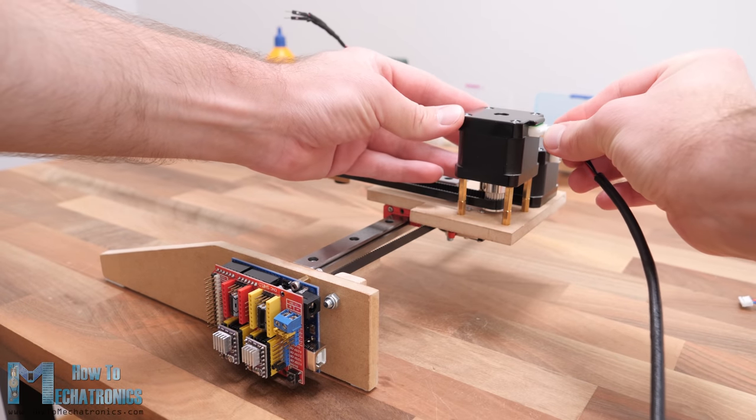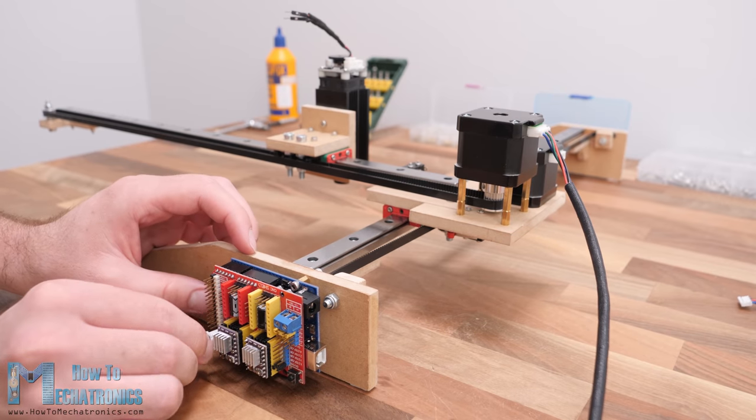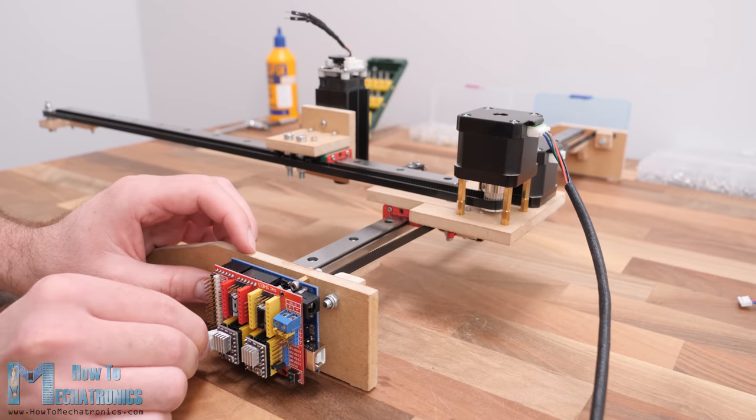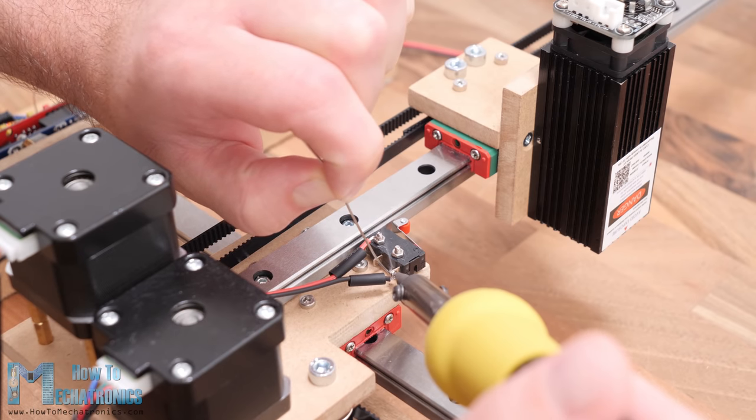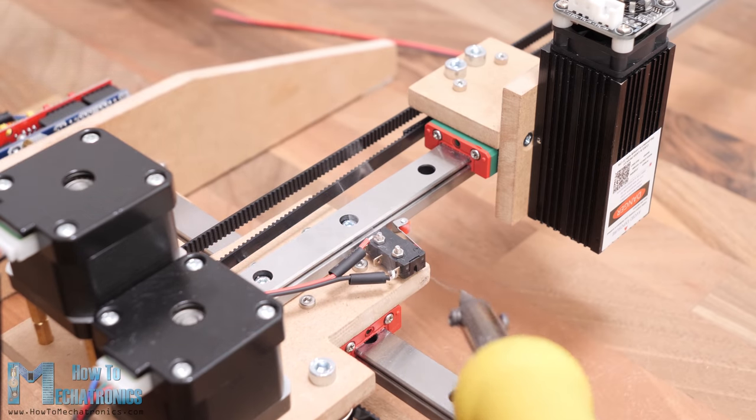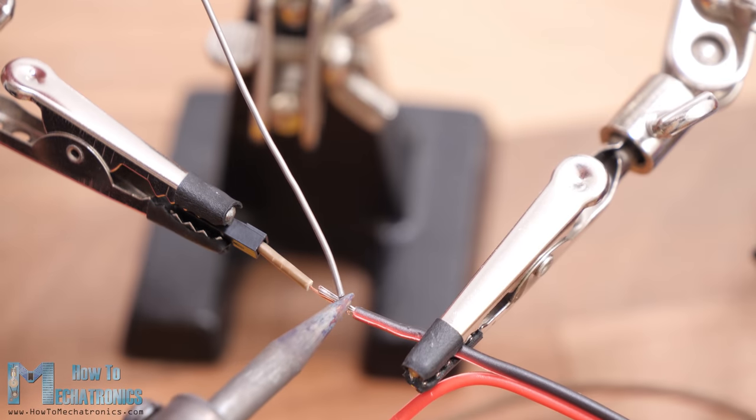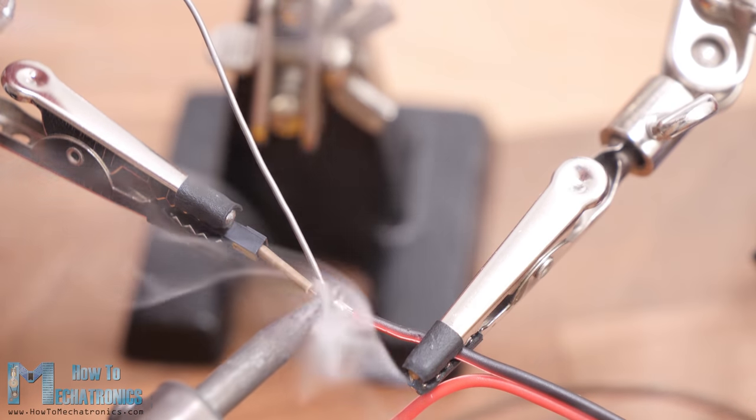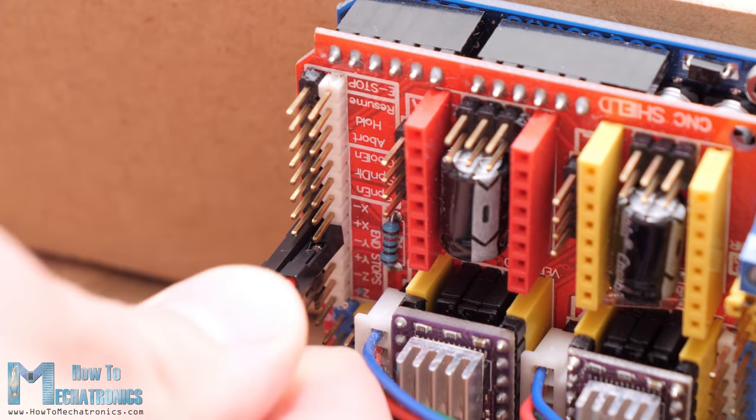Please note here that these three jumpers should be removed as we don't need them. I used them in one of my previous projects. Next we can connect the stepper motors in place with the provided cables. For connecting the limit switches, we need two wire connections. I soldered one end of the wires directly to the end stops and on the other side I soldered female pin headers so I can easily connect them to the CNC shield.